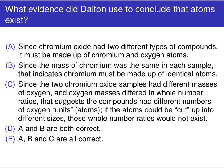Is it (B) since the mass of chromium was the same in each sample, that indicates chromium must be made up of identical atoms? Or is it (C) since the two chromium oxide samples had different masses of oxygen, and oxygen masses differed in whole number ratios...